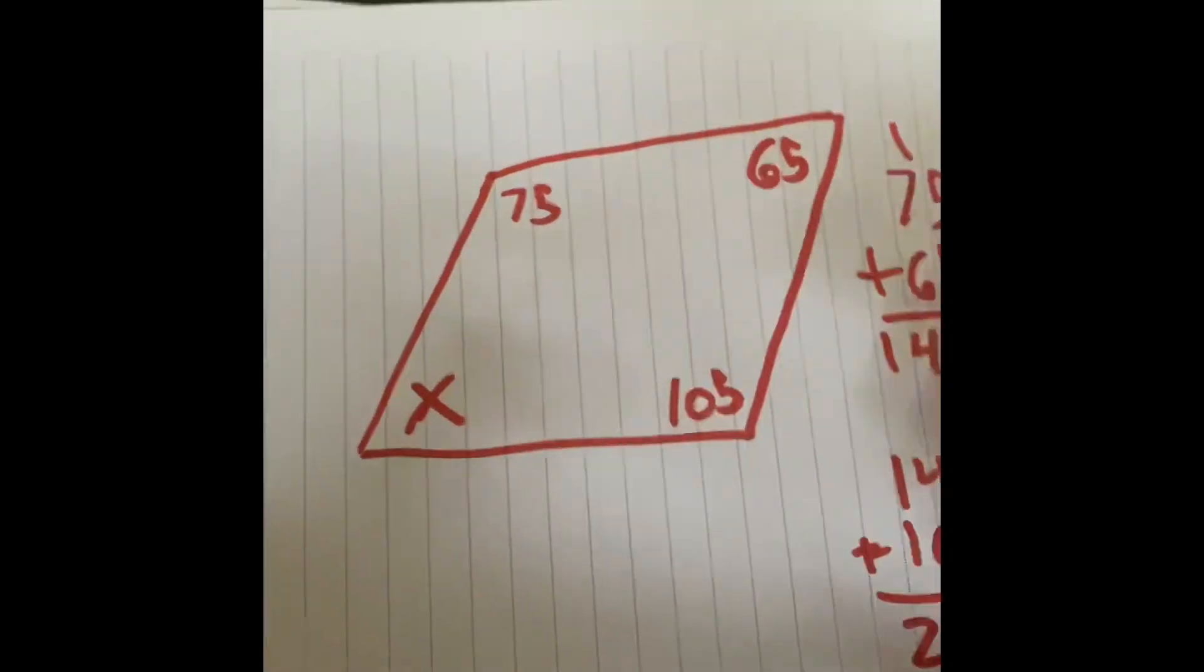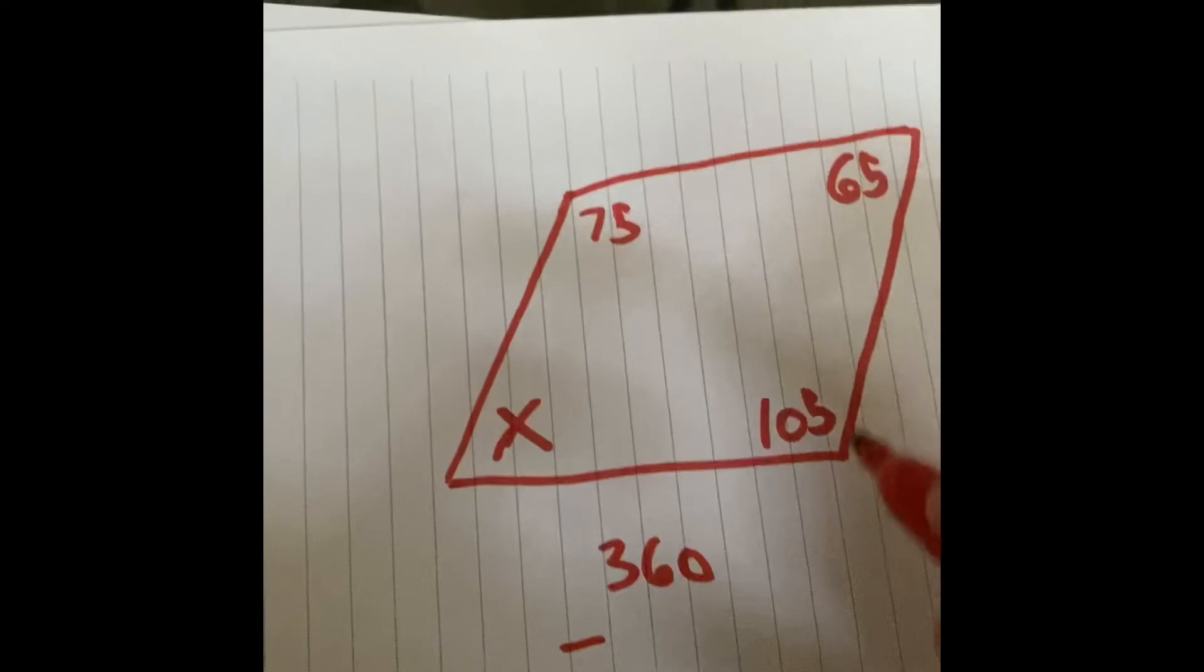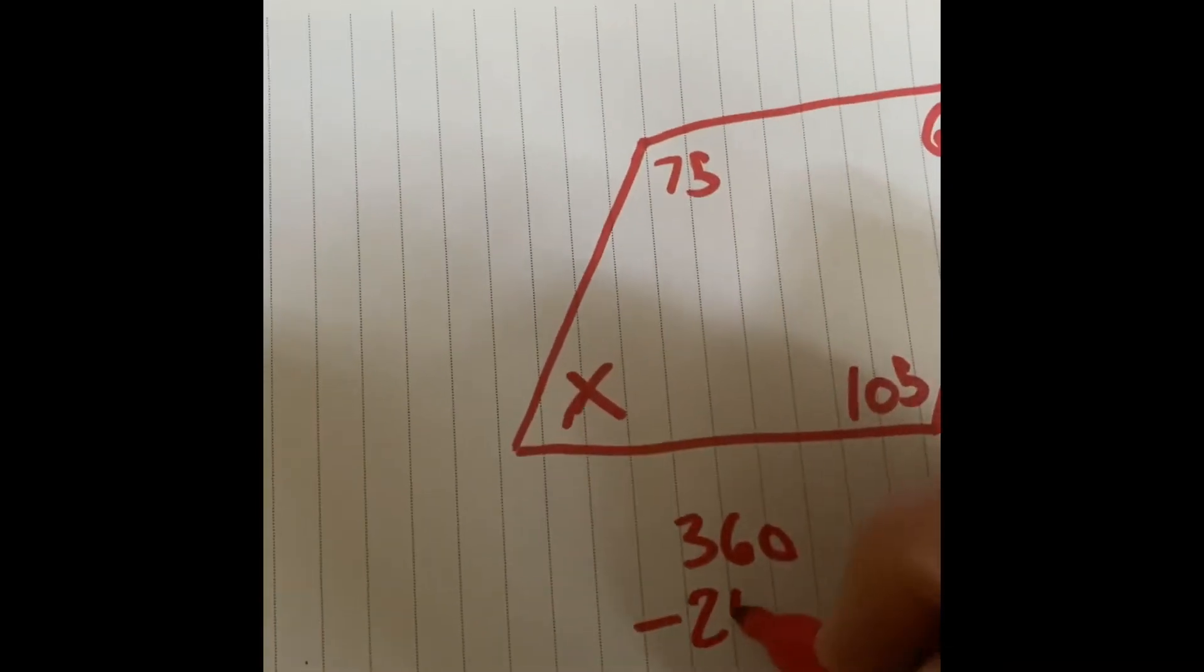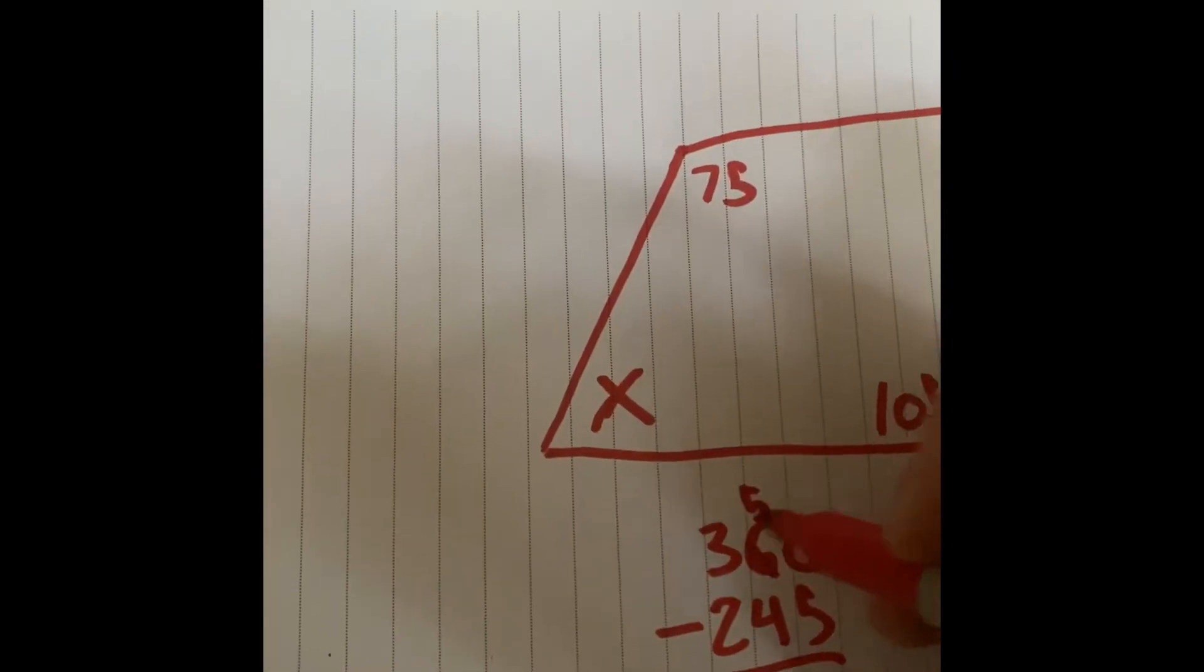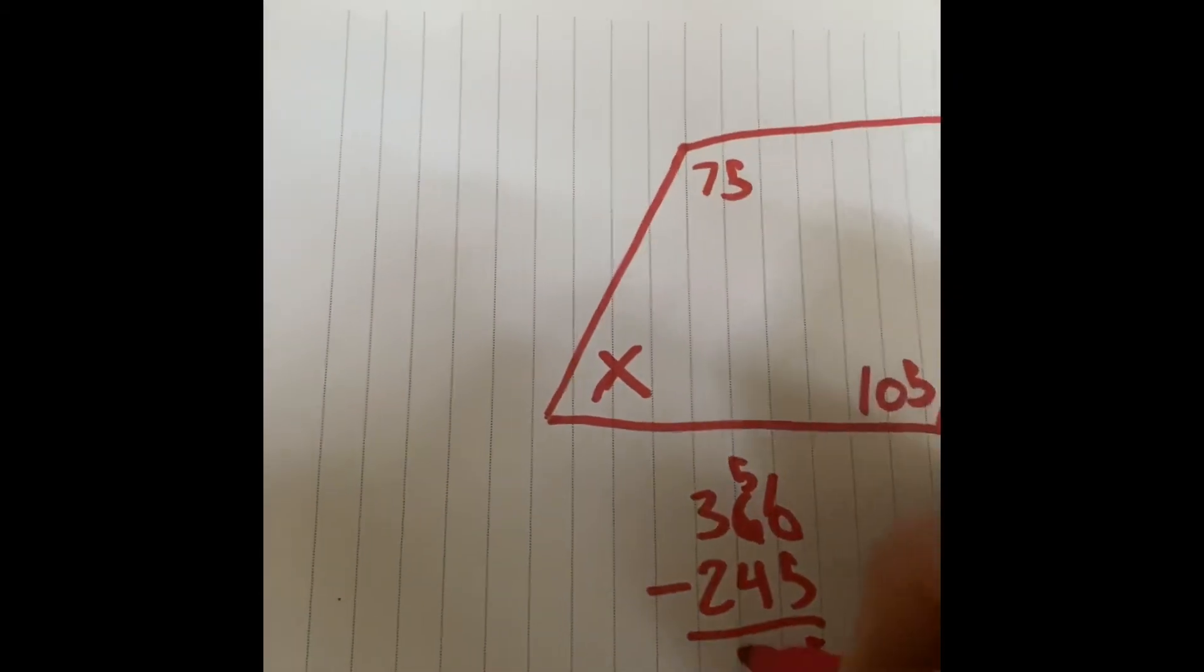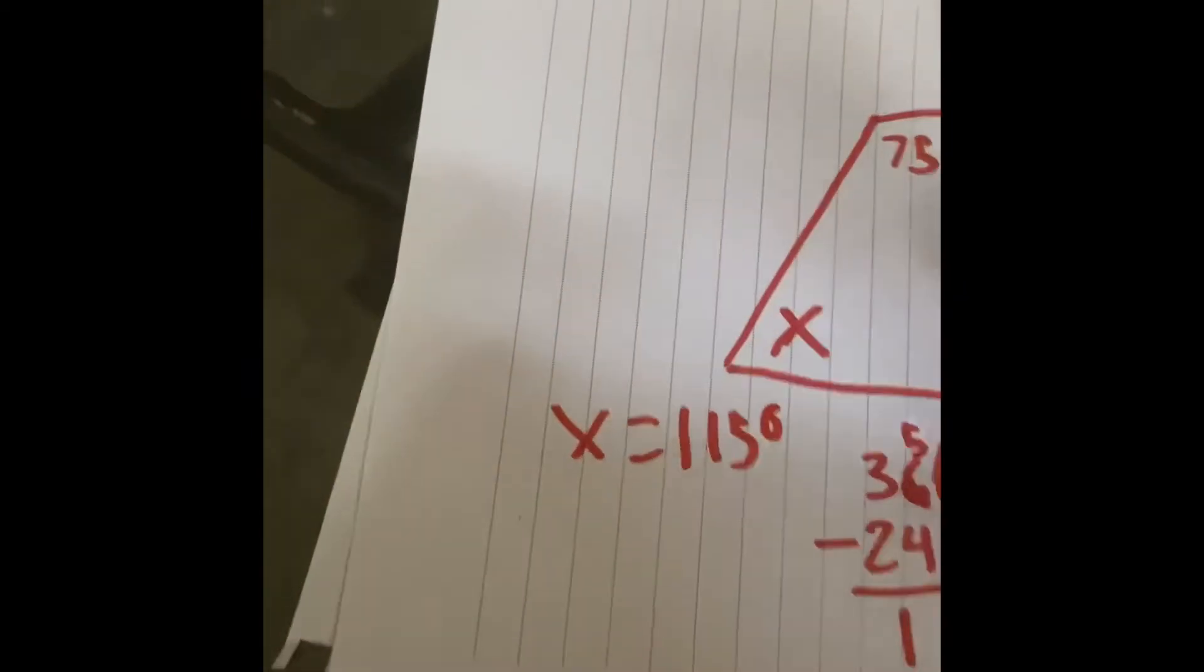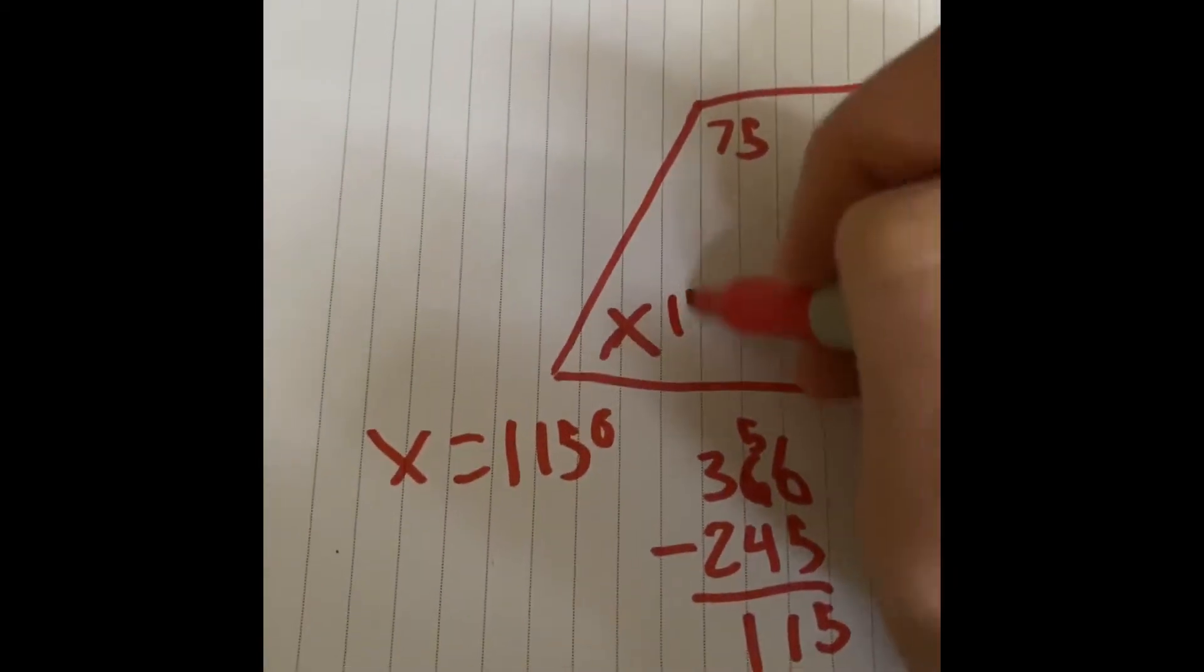So I know total I need 360. So 360 minus the 245, which is the total of the three angles. Then I can go through and solve this. I get 5, 1, 115. So I know that x equals 115 degrees and that would be the missing angle measurement here.